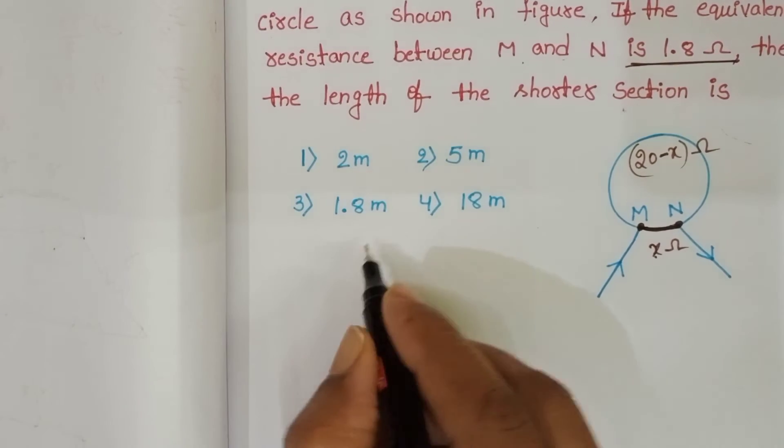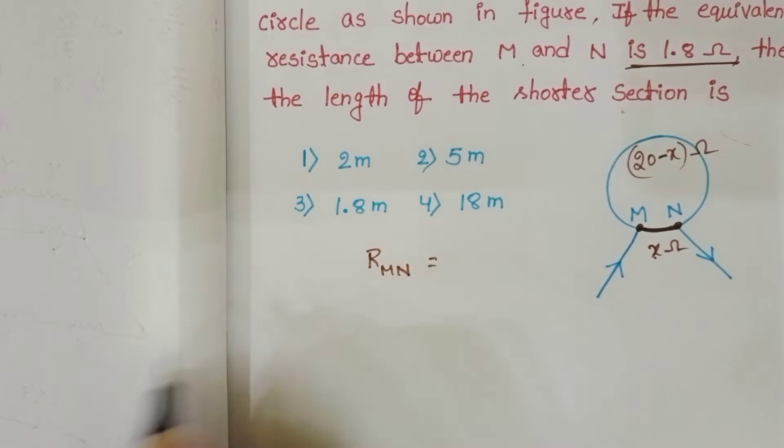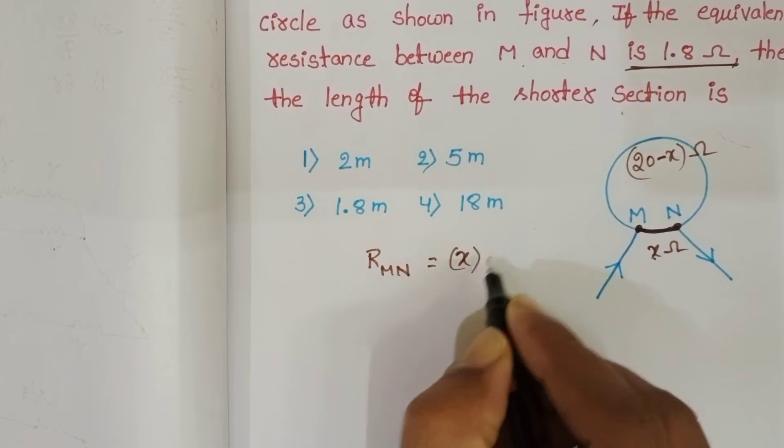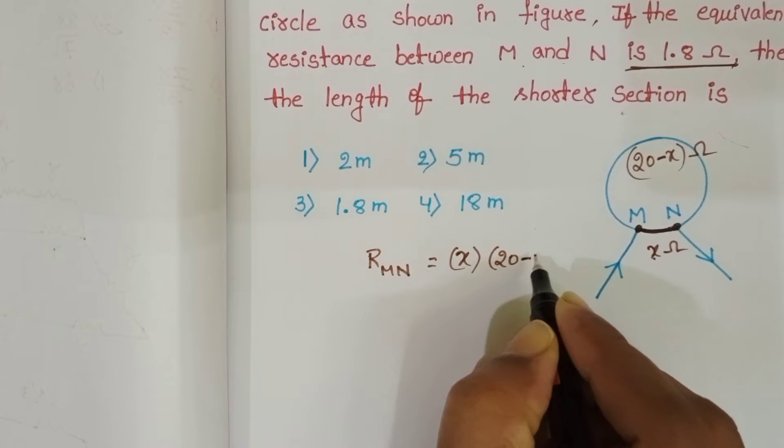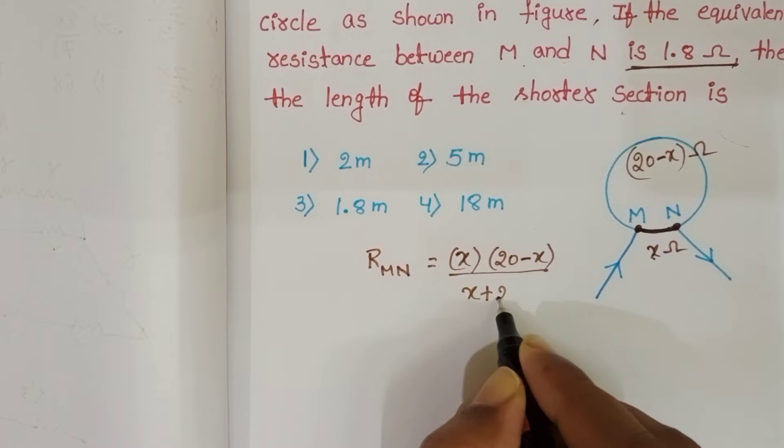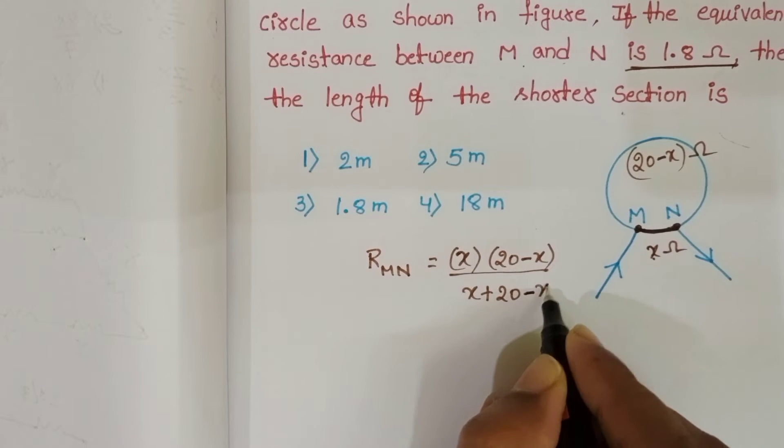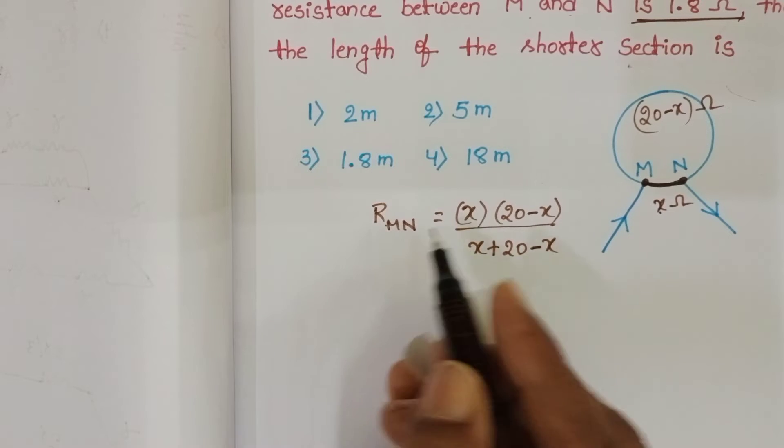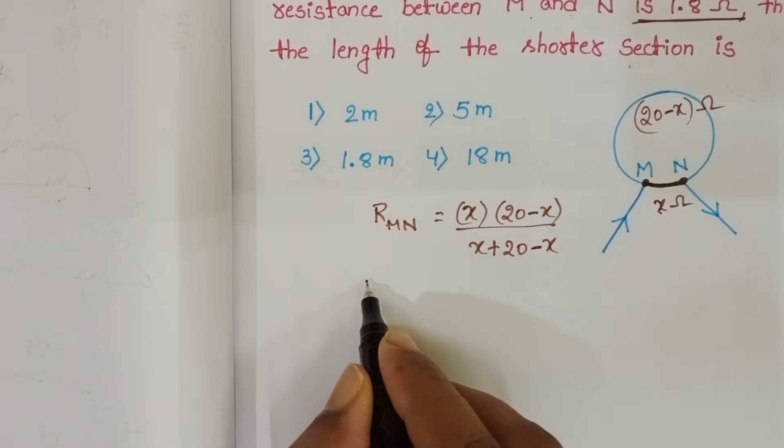So resistance between M and N points equals X times (20 minus X) divided by (X plus 20 minus X). And this resistance is 1.8 ohm.